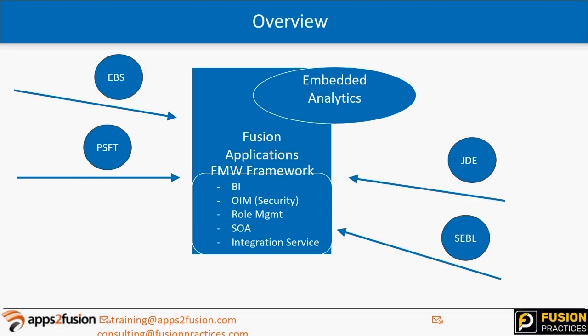Then we have something called Fusion Middleware. Oracle is running a lot of servers behind the scenes, with multiple applications or servers running for different aspects — for security, for role management. For workflow, we have SOA-based AMX which is used for handling approvals. We also have BI for business intelligence and ICS for integration services — many middleware components doing different things behind the scenes.